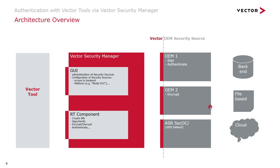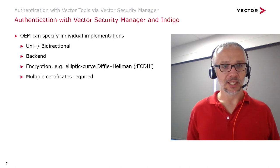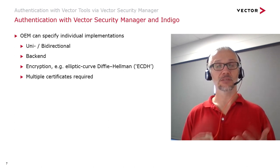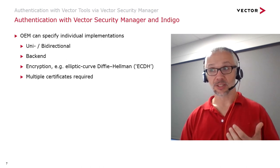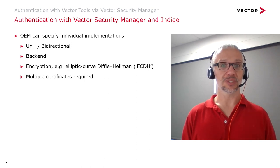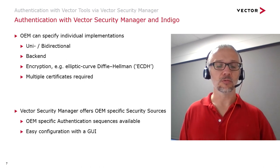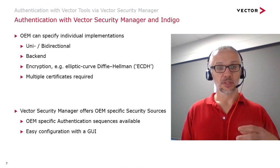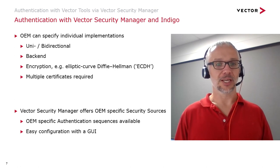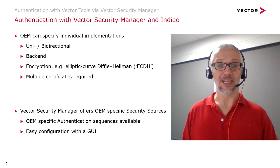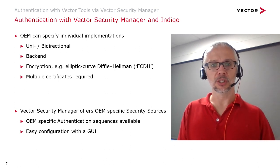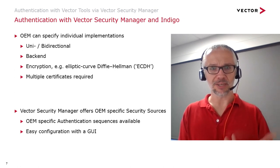The user is completely abstracted from all the security considerations. This means that the OEM is able to specify many different implementations — it can be unidirectional, bidirectional, it can involve a back-end, we can have elliptic curve Diffie-Hellman encryption, and you can have a number of certificates being required. From Vector's side, we're able to provide via the security manager the ability to work with lots of different security sources. OEMs are also able to provide their own sources that match to the security manager. Configuration is very easy — just a case of clicking a button to import a file, and then that profile is available for any Vector tool user on that PC.